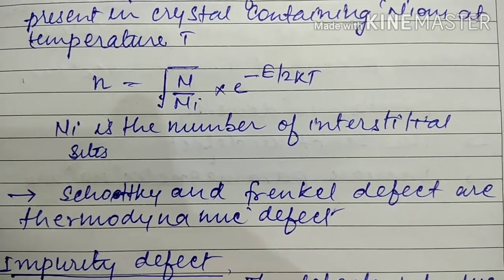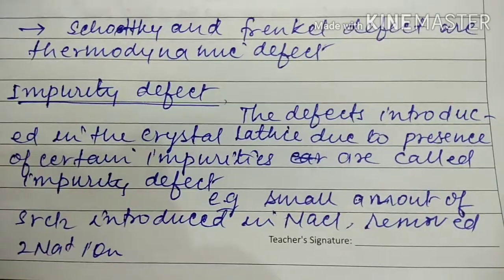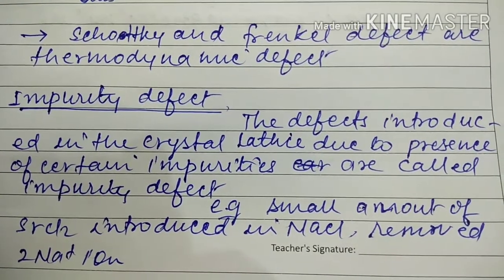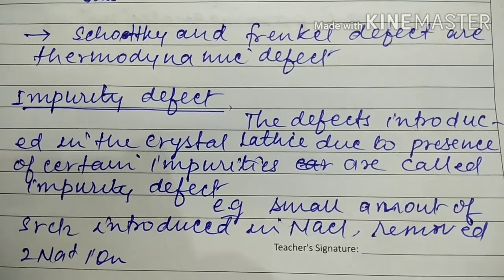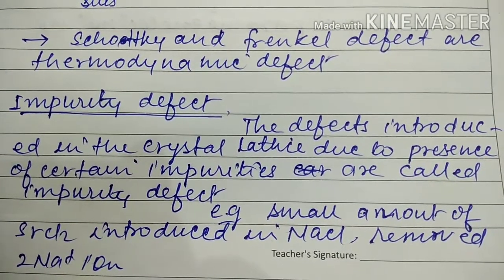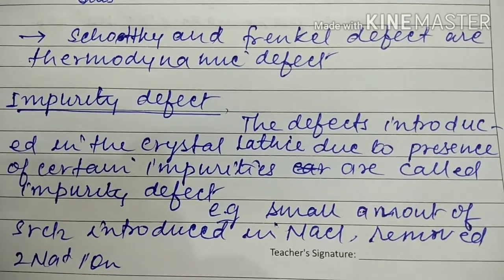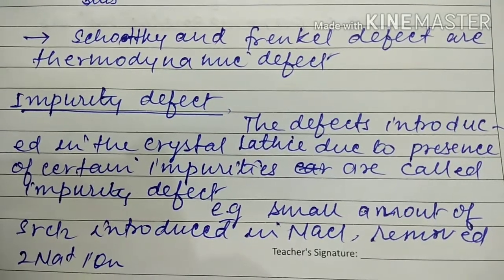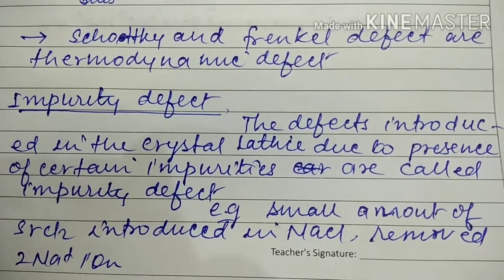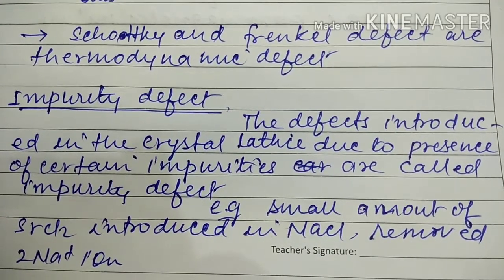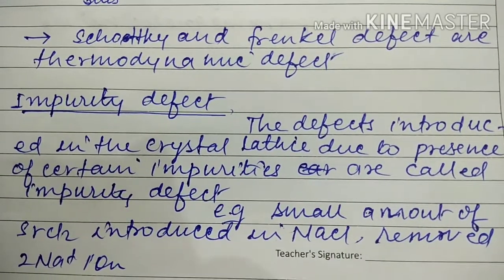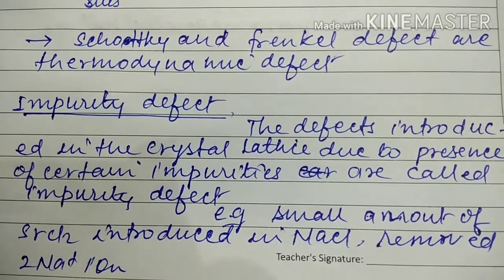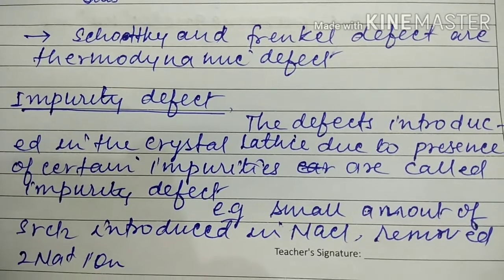Next are impurity defects — defects introduced in the crystal lattice due to the presence of certain impurities. For example, when a small amount of SrCl₂ is introduced into NaCl: Sr has a +2 charge and Na has a +1 charge, so to maintain electrical neutrality, 2 Na⁺ ions are removed for every Sr²⁺ introduced.